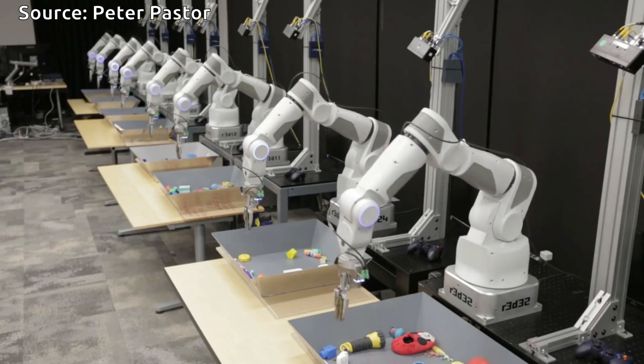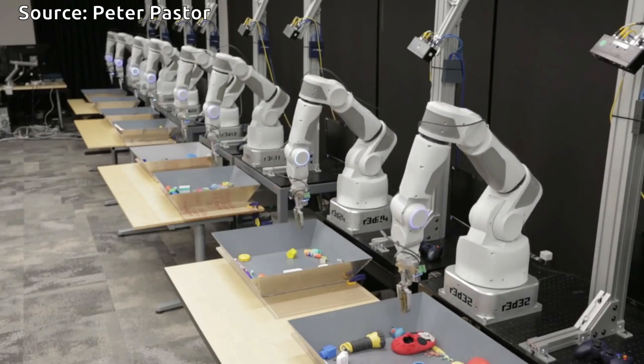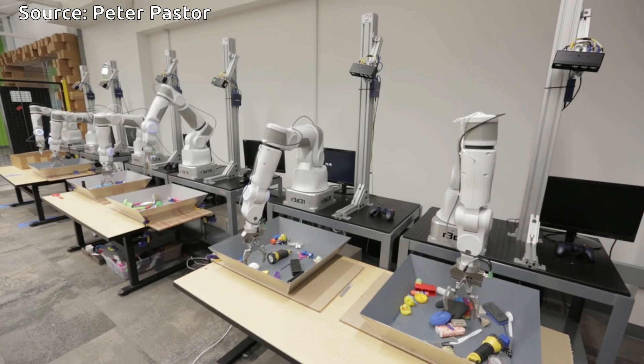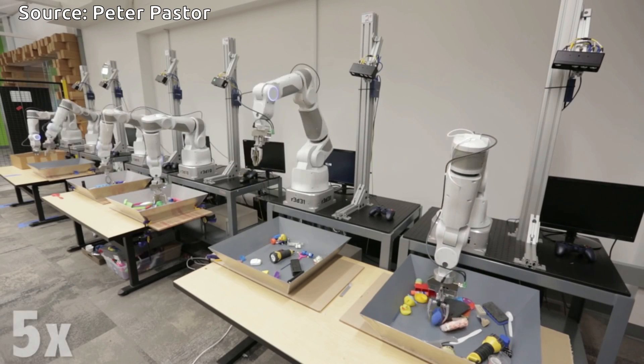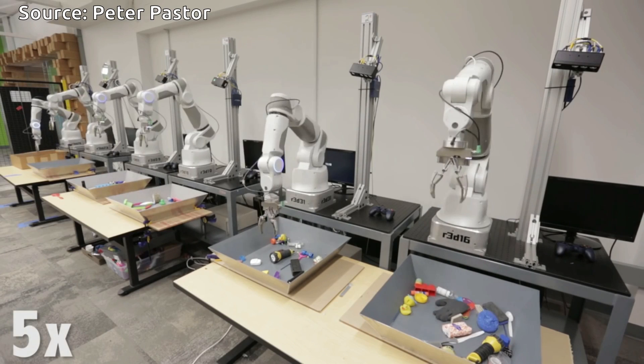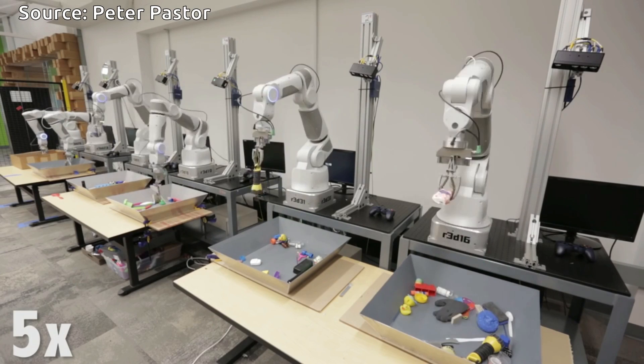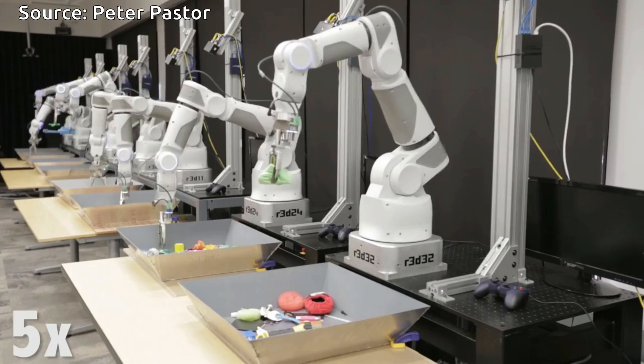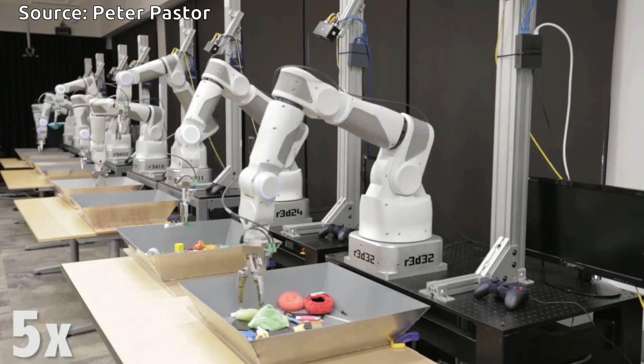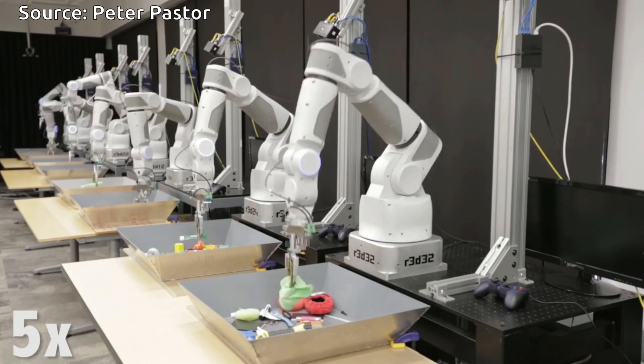A human child is able to reliably grasp objects after one year and takes around four years to acquire more sophisticated precision grasp. However, networked robots can instantaneously share their experience with one another, so if we dedicate 14 separate robots to the job of learning grasping in parallel, we can acquire the necessary experience much faster.